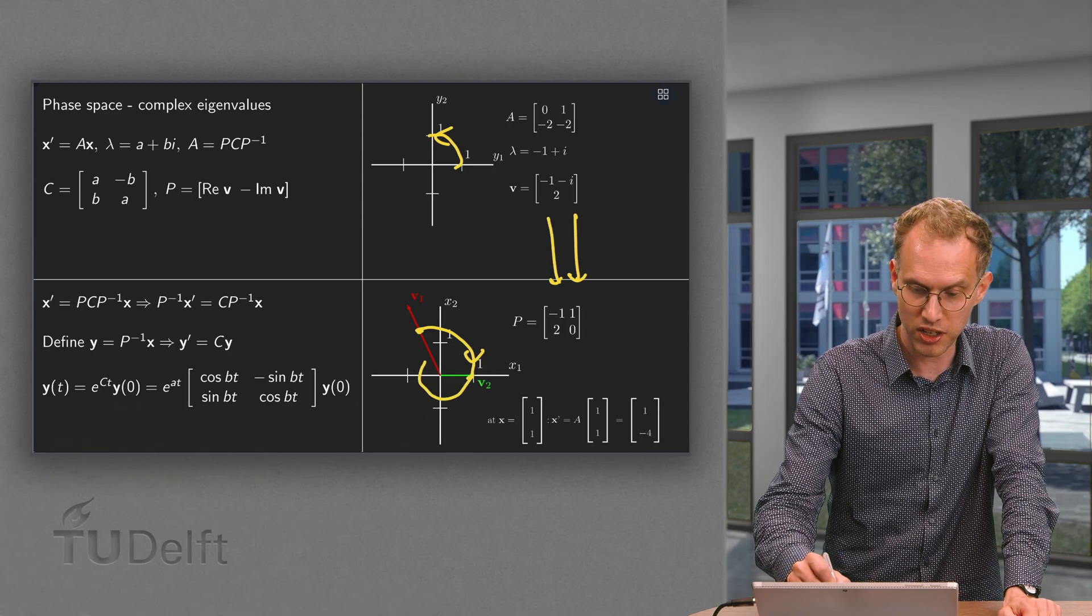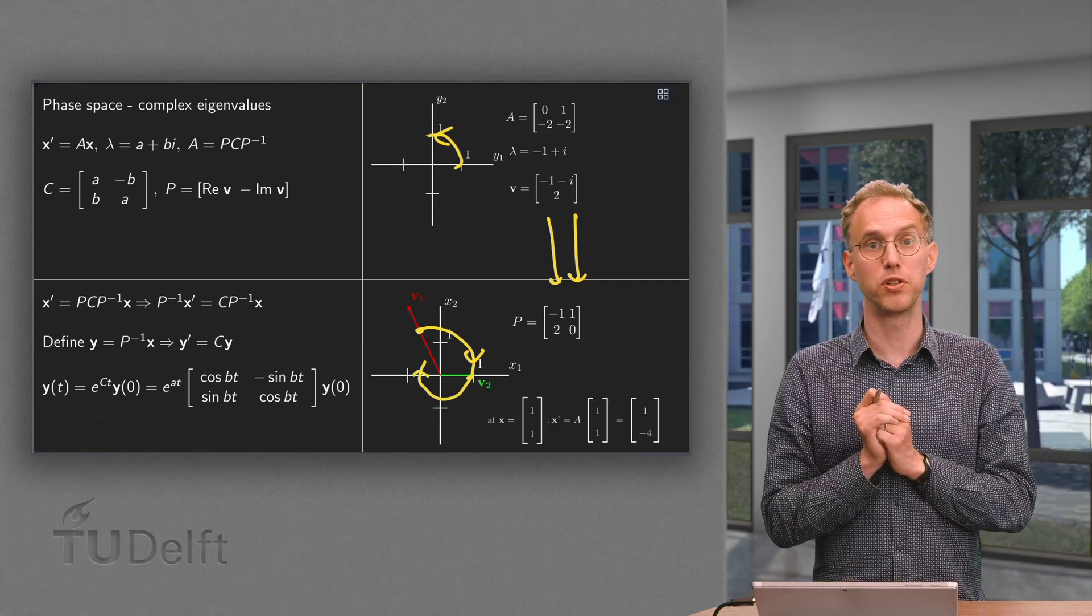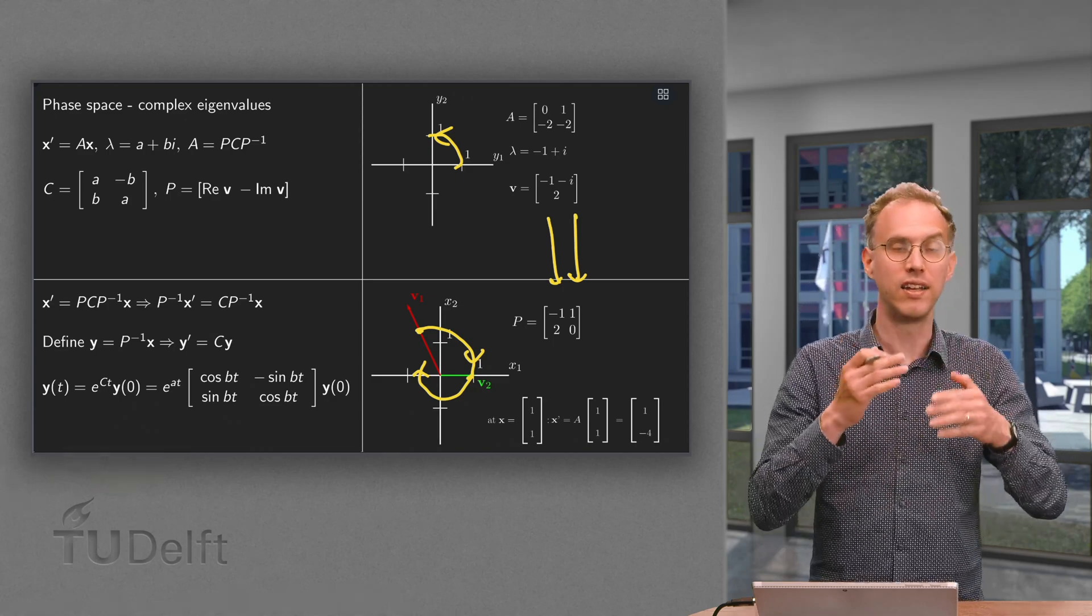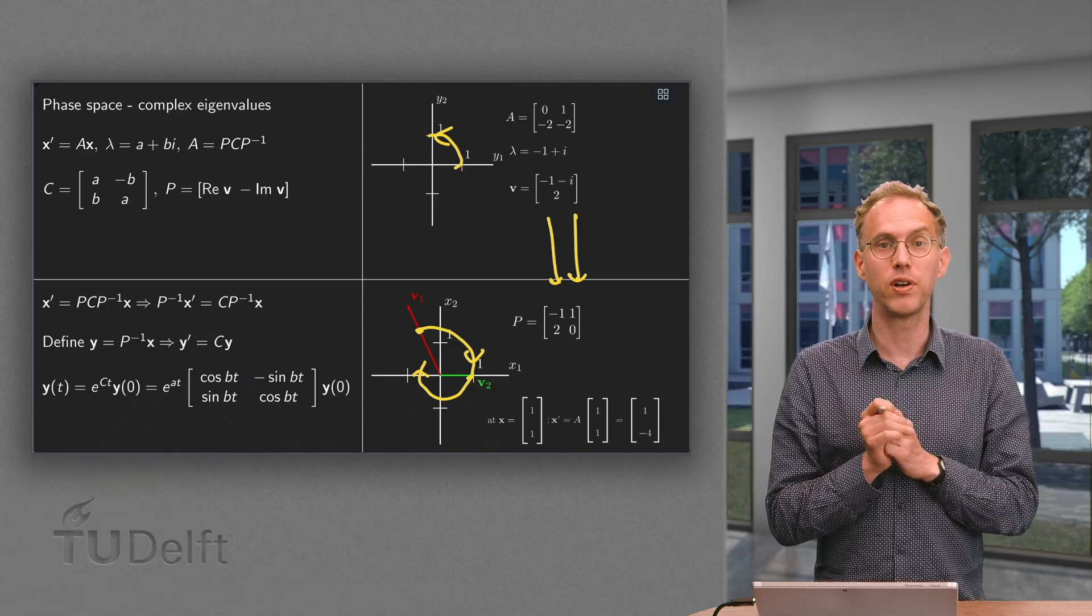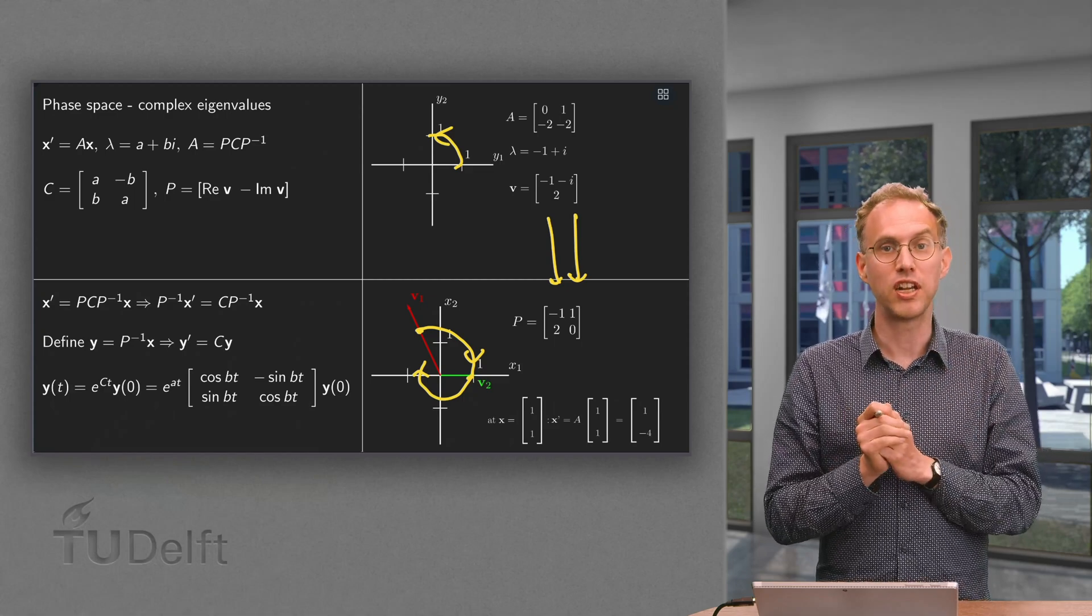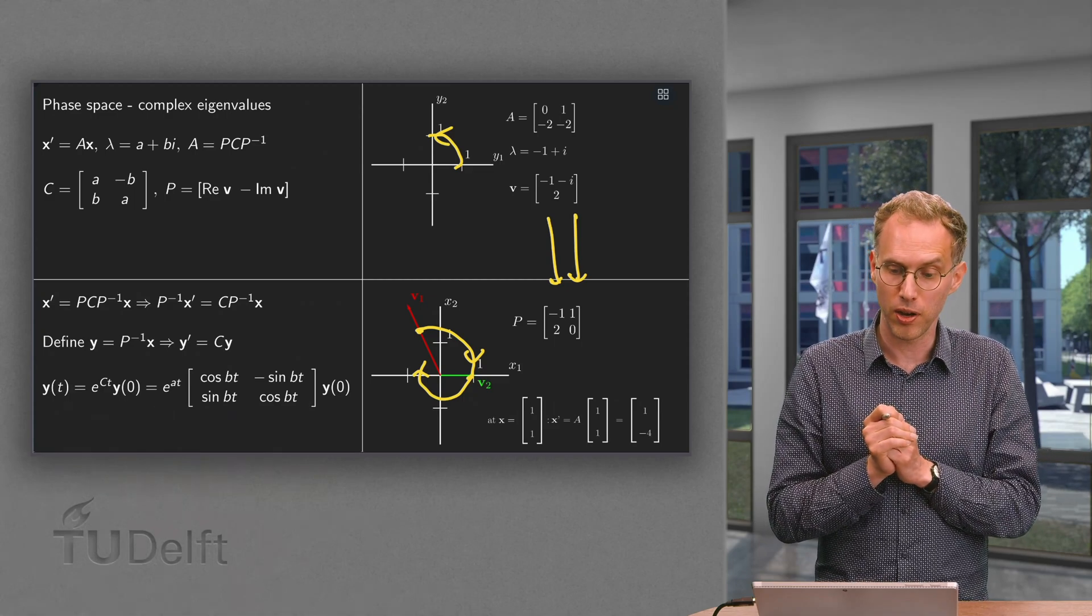So in this case we will rotate in the original variables clockwise. Again, going in. So we are again spiraling inward. But only in this case now we rotate clockwise.